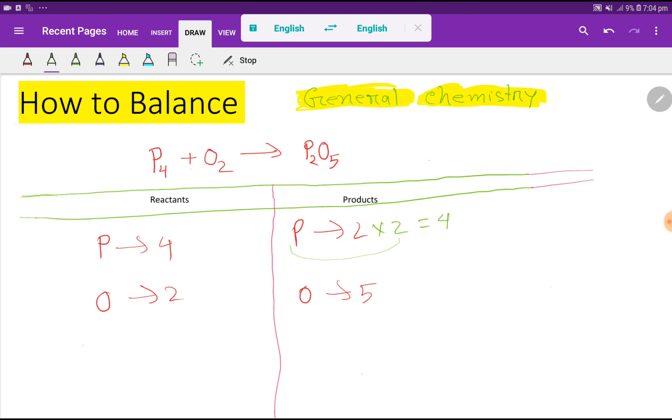If you multiply by something, that something will come before the atom, so you have to place here two. Remember, we can change the coefficient, not subscript. So now multiply two times two, that gives you four phosphorus, and two times five, that is you have ten oxygen.